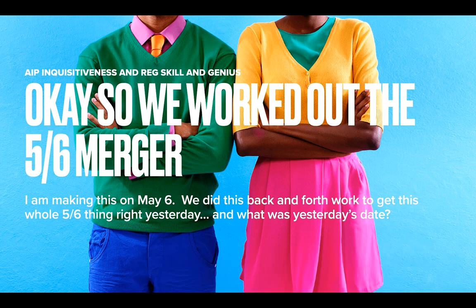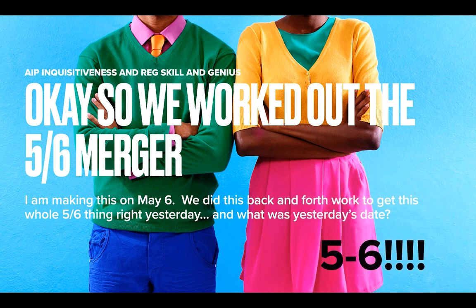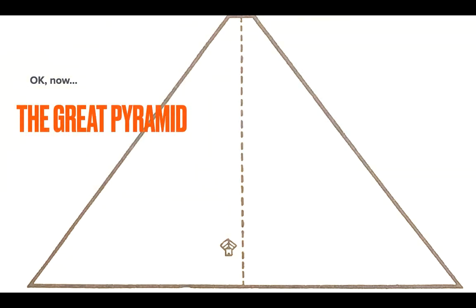Okay, so we worked out the 5-6 merger. I was a little bit tardy in making this video. But it was actually on May 6 that he and I worked out the 5-6 merger, especially him. I just kind of pressed him on it. And so interesting providence that it was on 5-6 that we worked out the 5-6. It seems often when you work with sacred geometry, those kind of providences happen. So that's the 5-6 merger, the pentagon and the hexagon. We'll talk more about its meaning in a bit.